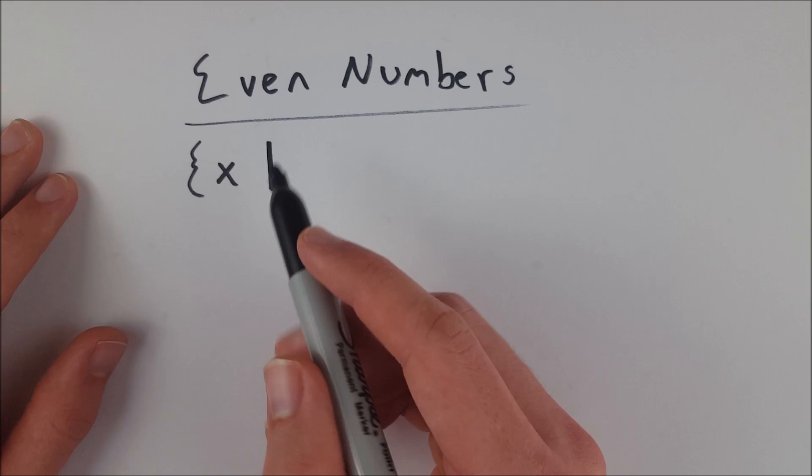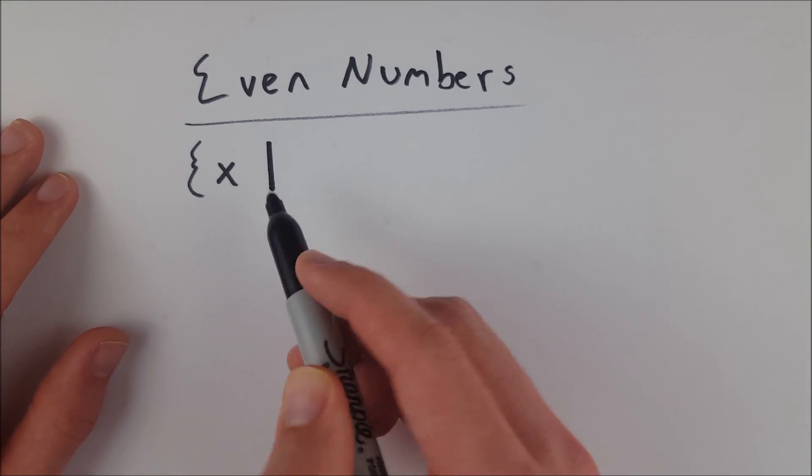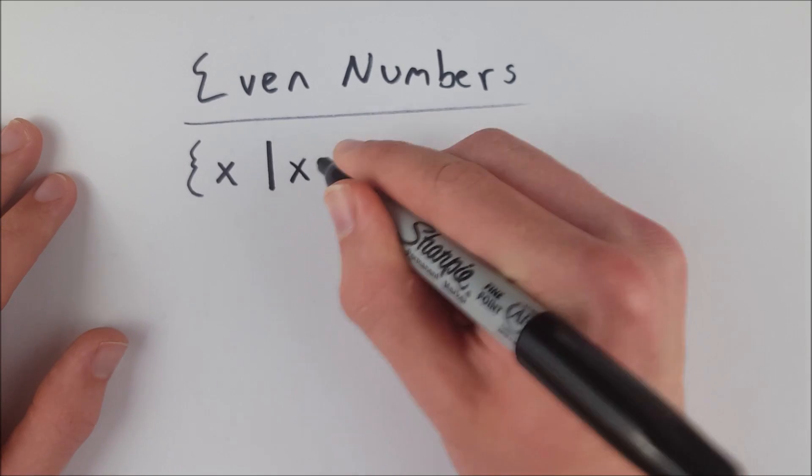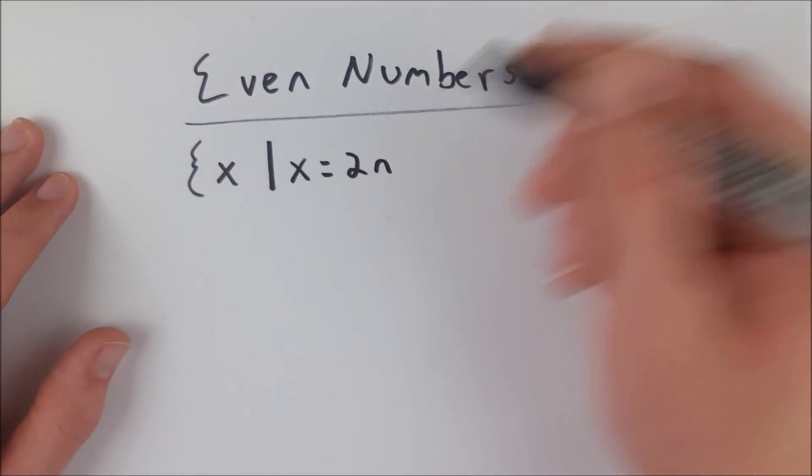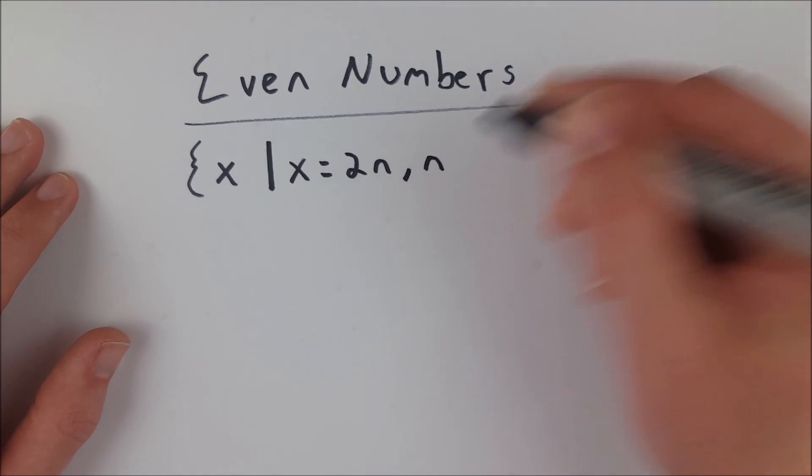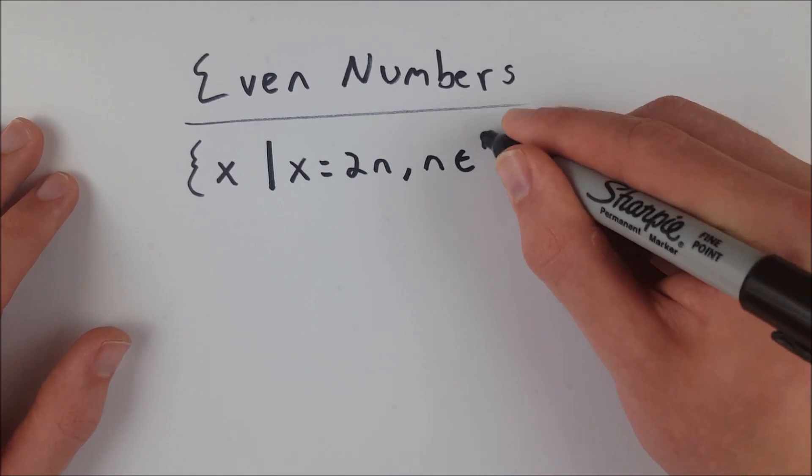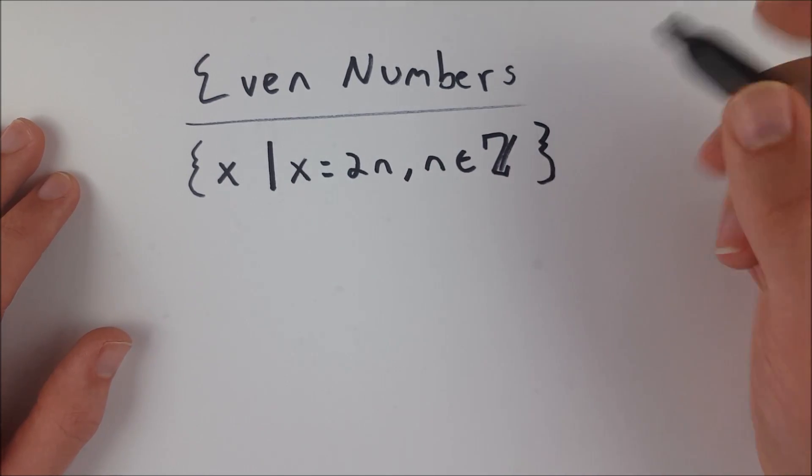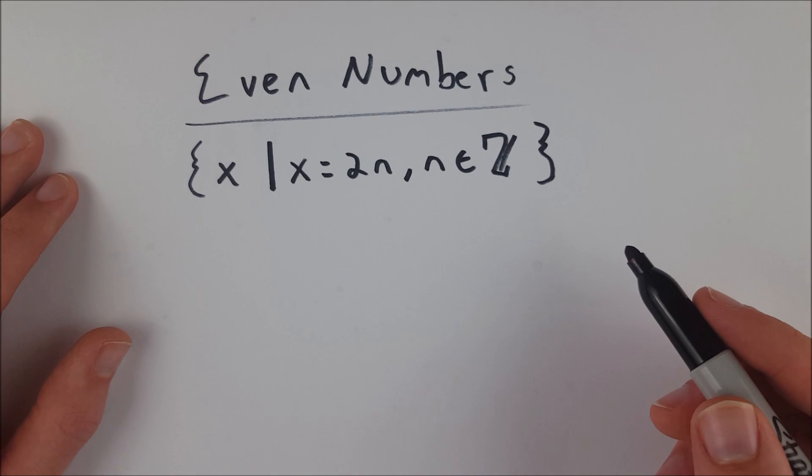So we read this as all numbers x, such that, and then we place our restrictions that x has to equal 2n, and this is the definition of an even number once we specify that n has to be an element of the integers. And then we close our set, and this is the even numbers.